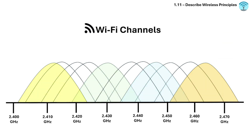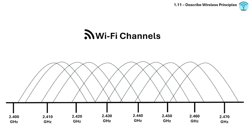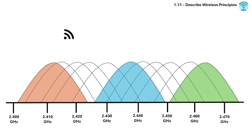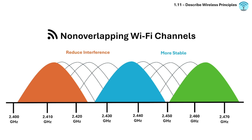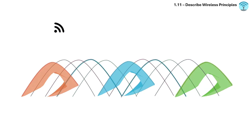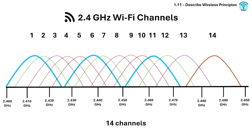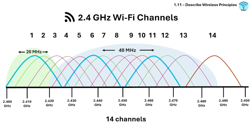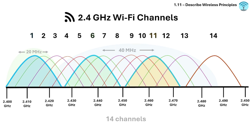In wireless networking, Wi-Fi channels can overlap and interfere with each other. Non-overlapping channels reduce interference and ensure more stable wireless communication. The 2.4 GHz band has 14 channels, but in most countries only channels 1 to 11 are used. Each channel is 20 or 40 MHz wide and they overlap with each other.